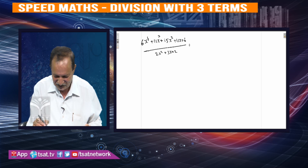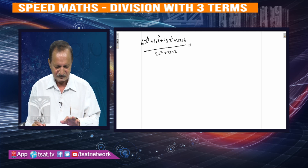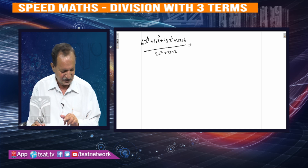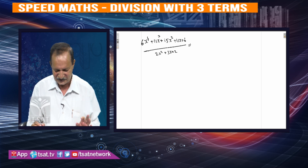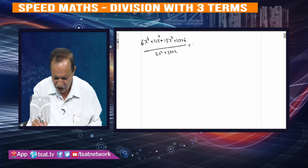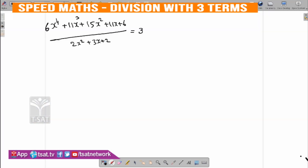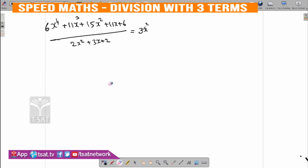How to use the MSD? First, 6x to the power of 4 divided by 2x squared gives x to the power of 4 by x squared. So the first step gives 3x square: 6x to the power of 4 by 2x square equals 3x square.